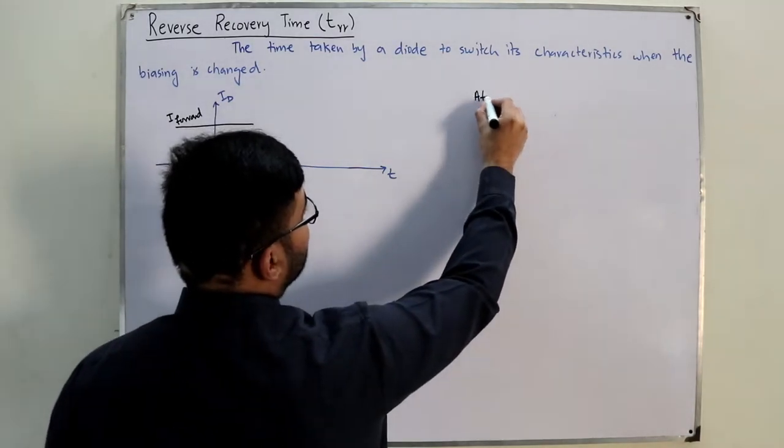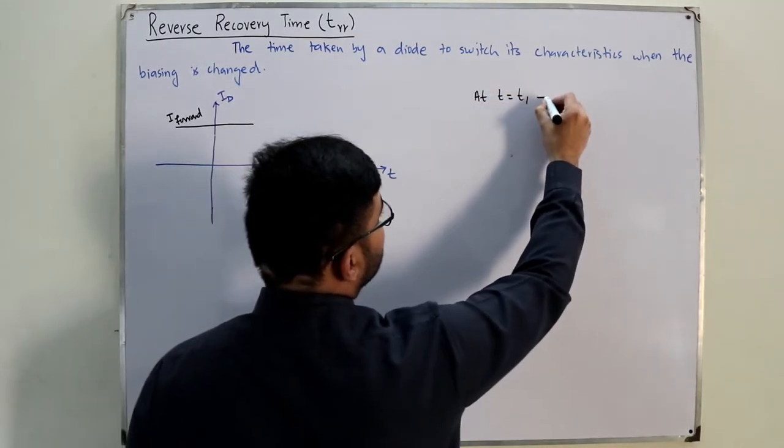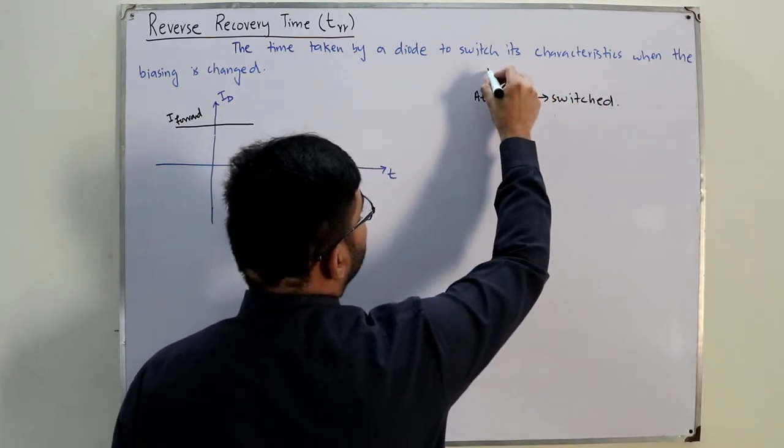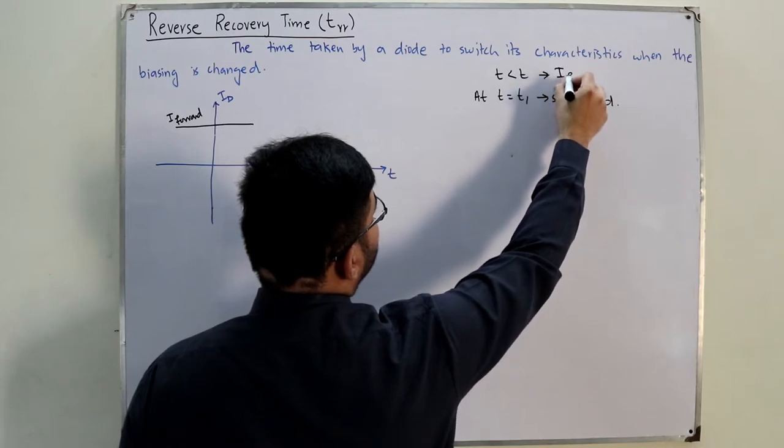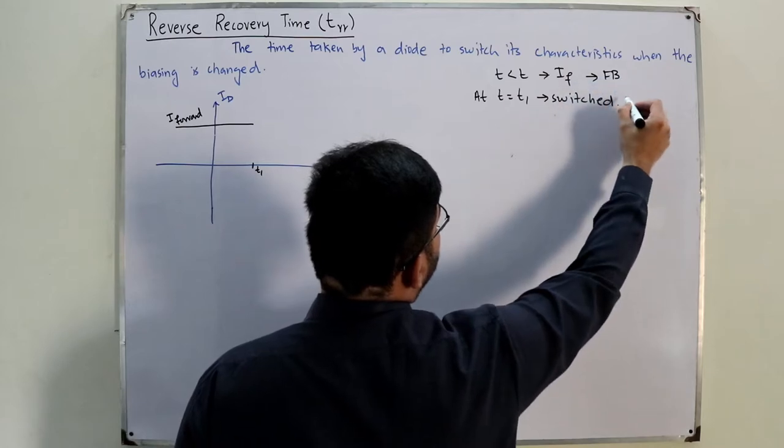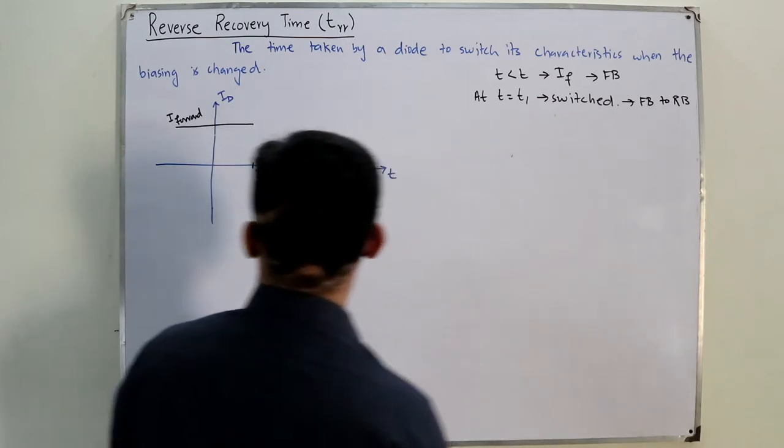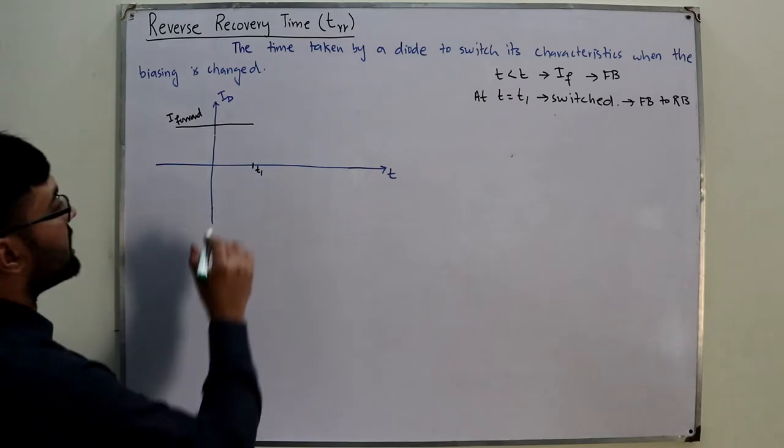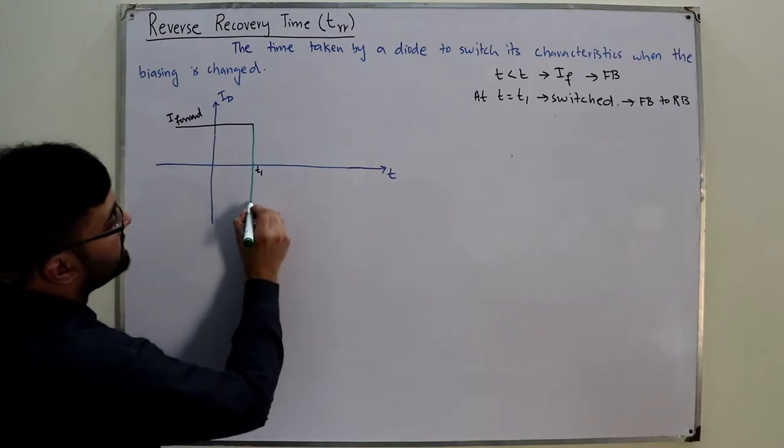At T is equal to T1, you have switched it. And before T1, when T is less than T1, you have I forward, which means this is forward biased. And switched means what? From forward biased you change it to reverse biased. So what will happen? The current will drop.